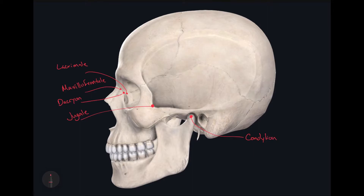Just a little bit posterior to the condylion we have the external acoustic meatus of the temporal bone. The most superior part of that opening — where I'm identifying right here with this red dot — is called the porion.